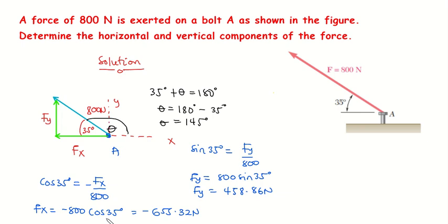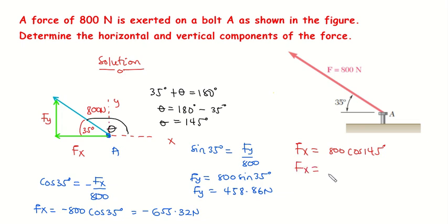When using this method, you don't have to bring in the negative sign manually — the answer will tell you the sign automatically. So FX equals 800 multiplied by cosine of 145 degrees. We get 800 times cosine of 145 degrees equals -655.32 Newtons, just like before, without needing to insert the negative sign manually.